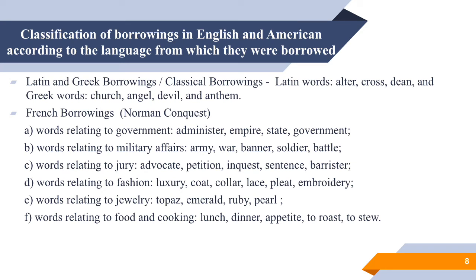Classical borrowings continue to appear in Modern English as well, mostly as words formed with the help of Latin and Greek morphemes. The largest group of borrowings is French, most of which came into English during the Norman conquest. French influenced not only the vocabulary of English but also its spelling — documents were written in French as the local population was mainly illiterate and the ruling class was French. Runic letters remaining in English after the Latin alphabet were substituted by Latin letters and combinations of letters.